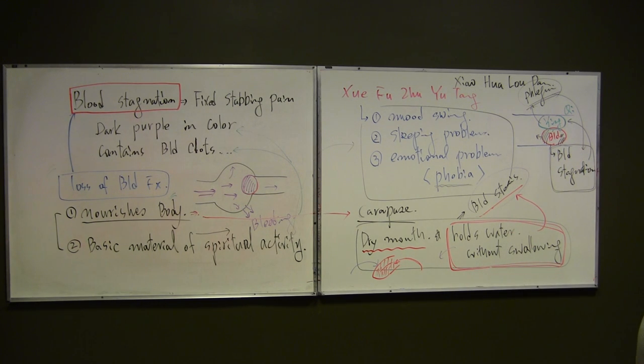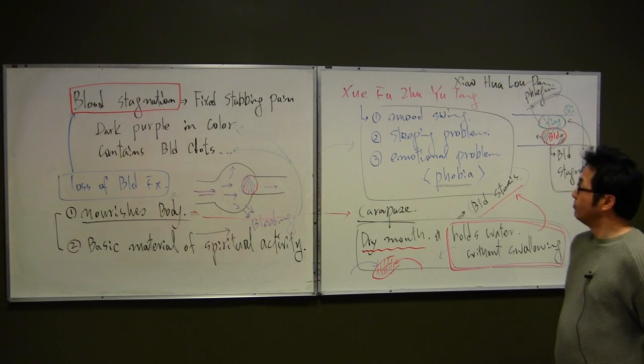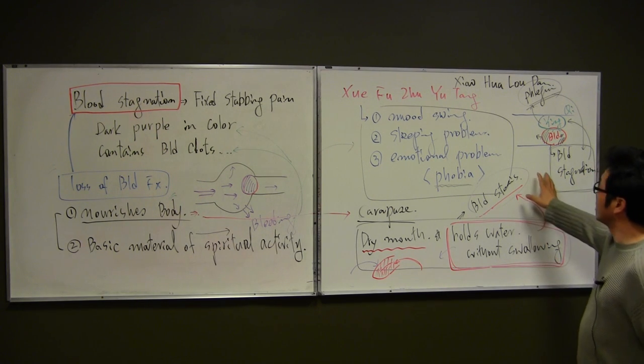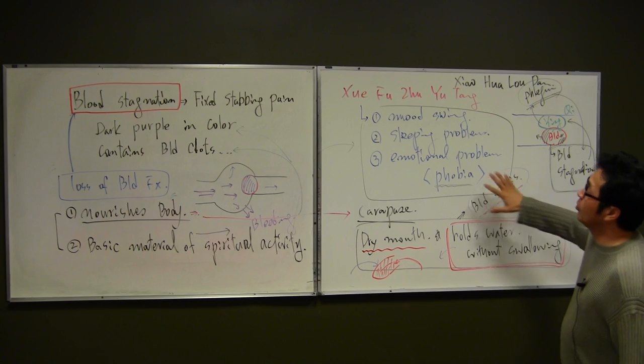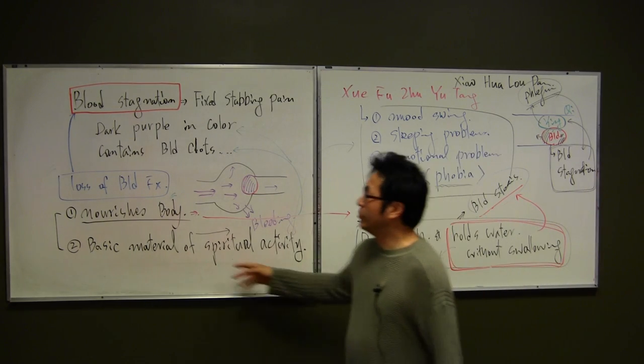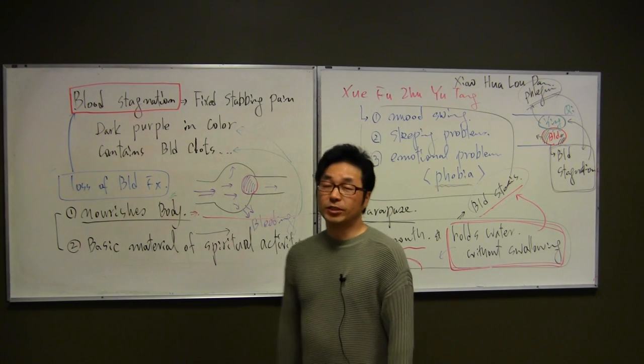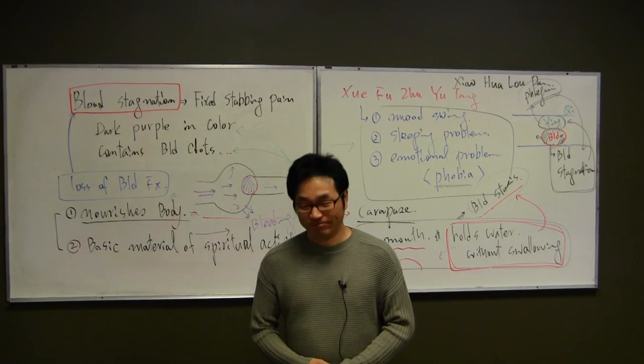So if you understand about the ying qi and blood, blood, ying qi or blood stasis and phlegm stasis, all these are connected together. So we try to understand of the blood stasis you have to know about all this connection and also you have to know about the hidden meaning of the blood stasis which is loss of the blood function. Okay, thank you.